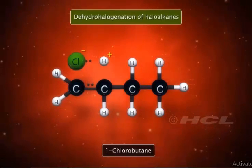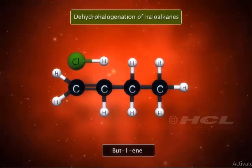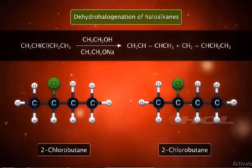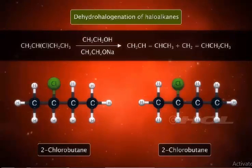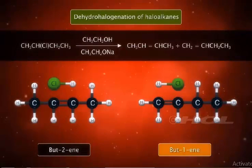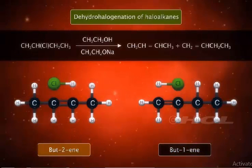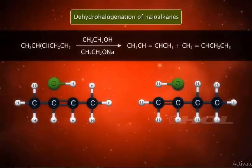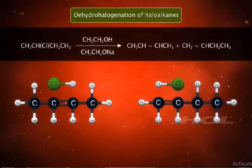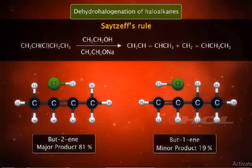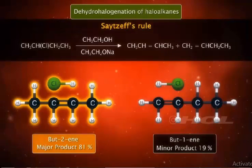Dehydrohalogenation of 1-chlorobutane yields but-1-ene. However, the elimination of hydrogen halide from 2-chlorobutane yields two products, but-1-ene and but-2-ene. The relative amounts of the products are governed by the Saytzeff rule, which states that the major product of an elimination reaction is the more substituted alkene.